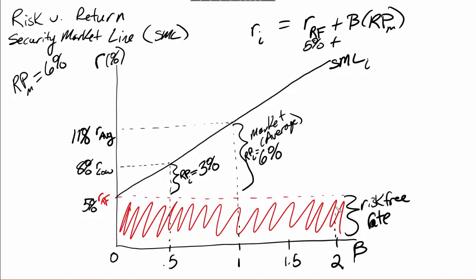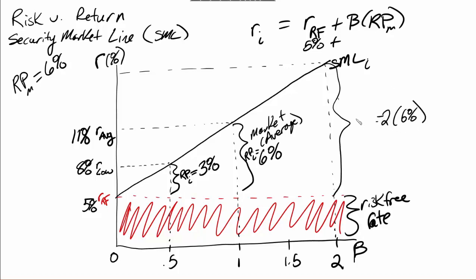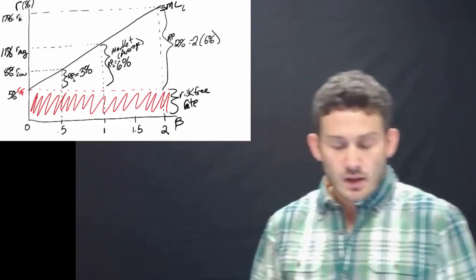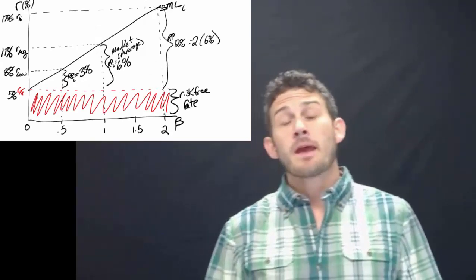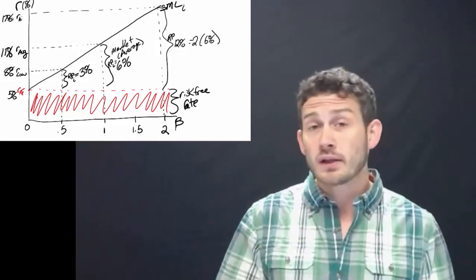Now let's trace up and look at a high-risk stock with a beta of two. The risk premium is going to be beta of two multiplied by the six percent market risk premium, which equals twelve percent. So the risk premium on a beta of two is twelve percent. Adding the five percent risk-free rate, the required rate of return on this high-risk stock is twelve percent plus five percent, which equals seventeen percent.